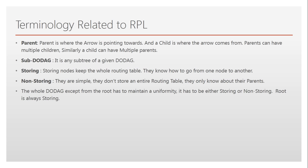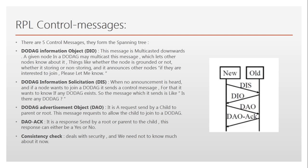Today we'll be discussing control messages. There are five control messages but we will be discussing four: DIO, DIS, DAO, and DAO-ACK. A consistency check won't be covered in detail as it deals with security. When a new node wants to be part of an already existing DODAG, a number of messages are sent back and forth between the new node and the existing DODAG.